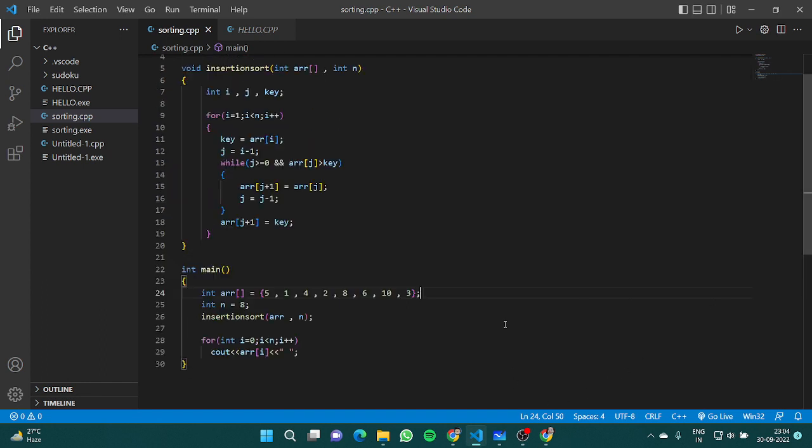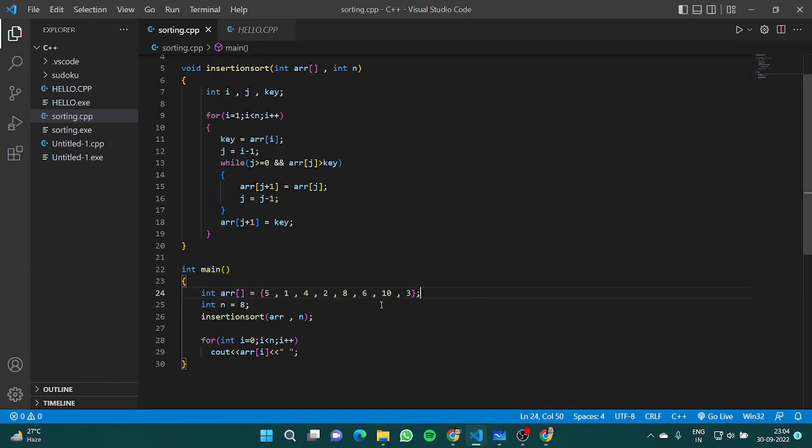Again you can see that the array has been sorted. Now if I talk about the time complexity here, we can see that this is a while loop and we have this for loop which runs n times. The first time would be 1, then 2, and so on.